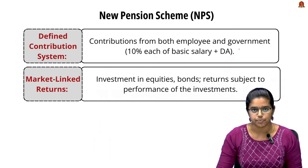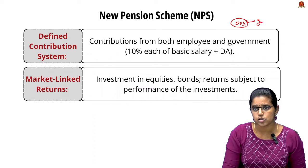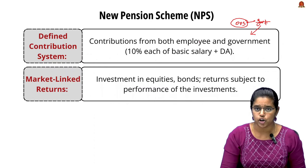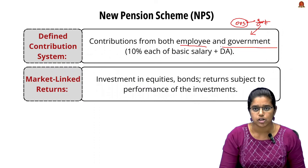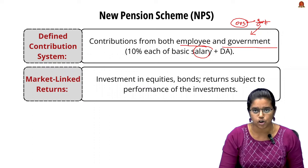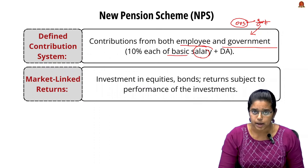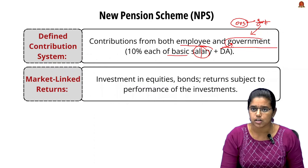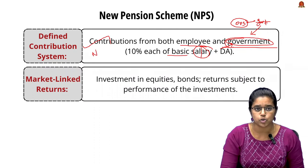The New Pension Scheme addressed the problem of the government bearing the entire contribution. Under the NPS, contributions are made by both the employee and the government — 10% of salary from the employee and 10% from the government. This is called the defined contribution system of the NPS, rectifying the non-contributory nature of the OPS.